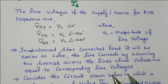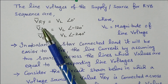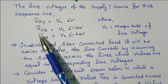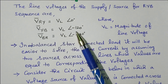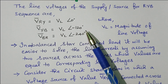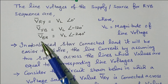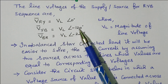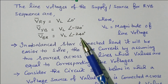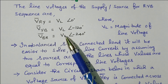The line voltages of the supply for RYB sequence are: VRY = VL at 0°, taken as the reference phasor. VYB = VL at −120°. We know there is a 120° phase displacement between each phase. So VRY at 0° means VYB is automatically VL at −120°. VBR is VL at −240°. The phase difference between adjacent voltages is 120°. VL is the magnitude of the line voltage.